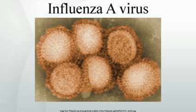The current H5N1 bird flu, also an influenza A virus, has a similar effect. The Spanish flu virus infected lung cells, leading to overstimulation of the immune system via release of cytokines into the lung tissue. This leads to extensive leukocyte migration towards the lungs, causing destruction of lung tissue and secretion of liquid into the organ, making it difficult for the patient to breathe.